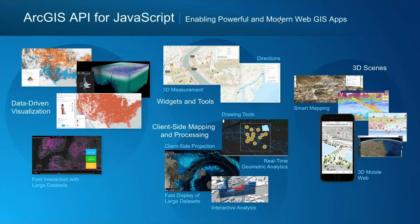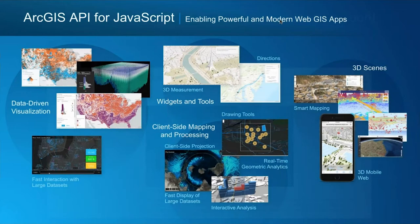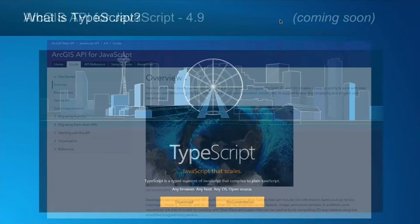The ArcGIS API for JavaScript is Esri's flagship web API. It uses modern browser technology, both on computers and mobile devices, to enable powerful workflows with optimized performance to display large quantities of data. We're going to assume you have some familiarity with the JavaScript API. The current version is 4.8, and we anticipate releasing version 4.9 later this week. As a fun fact, about 88% of our API is currently written in TypeScript — so we're not just promoting it, we're actually using it ourselves.